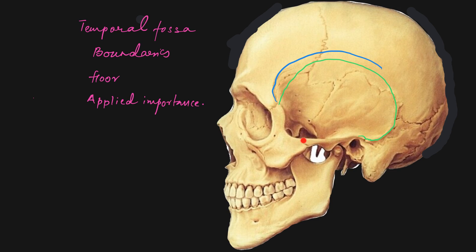Now we come to the inferior boundary. On the lateral aspect of the skull we see the zygomatic arch. Going deeper to the zygomatic arch, we find a gap, and deeper to that there is the body of the sphenoid bounded by the infratemporal crest of the sphenoid bone, which then continues with the greater wing of the sphenoid. Lower down there is the infratemporal fossa. We can also see the ramus of the mandible on the lateral side beneath the zygomatic arch.